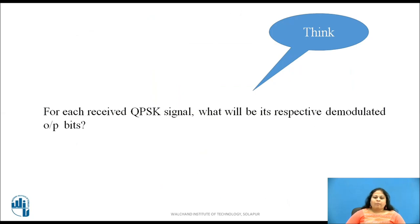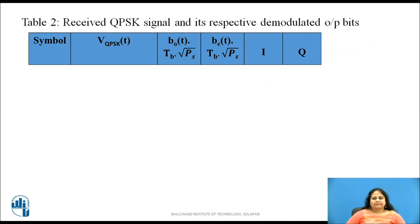Now, pause this video and based on the demodulation process explained till now, for the received QPSK signal, write down what will be its respective demodulated output bits for each symbol. Well, let us now see depending upon the QPSK signal received during each symbol duration what are the demodulated outputs.